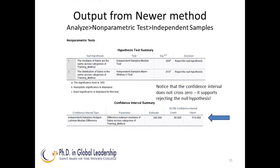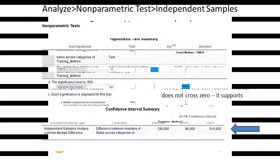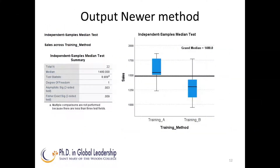The output is very clear and includes the confidence interval from the Hodges-Lehmann median difference. Note that the confidence interval is from 80 to 510 and does not cross zero. This supports the probability that we should reject the null hypothesis. One of the things I like in the newer output is the graph produced that shows the grand mean with the box plot. It's clear from this that Training Method A provides better sales results, and we know it's significant because we can rely on our probability tests that we just ran.